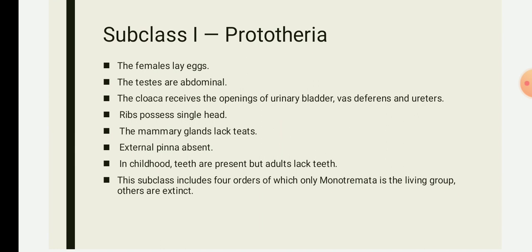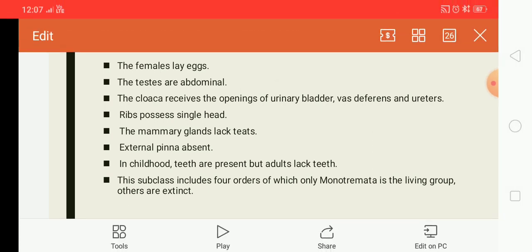Subclass one, Prototheria: 'proto' means first, 'theria' means beast. They will have no external pinna on the ear. Pinna is the only visible part of the ear with a special helical shape, and its function is to act as a funnel which assists in directing sound further into the ear. External pinna is absent in Prototheria. In the skull, tympanic bulla and lacrimals are absent, whereas the jugal is reduced or in some forms totally absent.